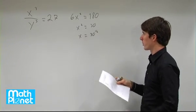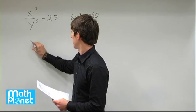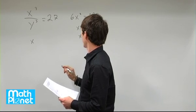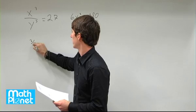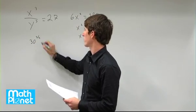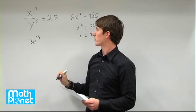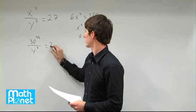So we can plug this in here. And that gives us x. x is 30 to the one half power. So 30 to the one half power cubed is 30 to the three halves power. So I plugged in x here. This one half multiplied by three is three halves divided by y cubed equals 27.